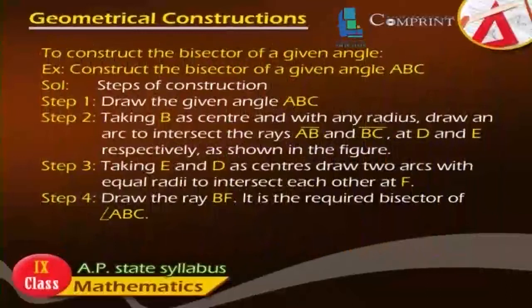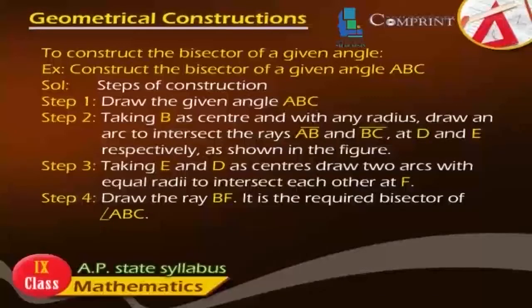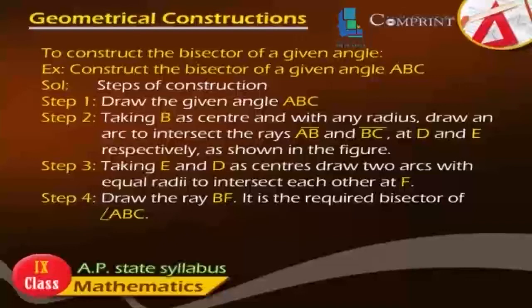Basic Construction: To construct the bisector of a given angle. Example: Construct the bisector of a given angle ABC. Step 1: Draw the given angle ABC. Step 2: Taking B as center and with any radius, draw an arc to intersect the rays AB and BC at D and E respectively, as shown in the figure.